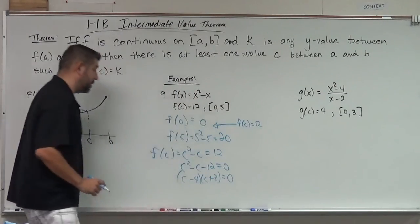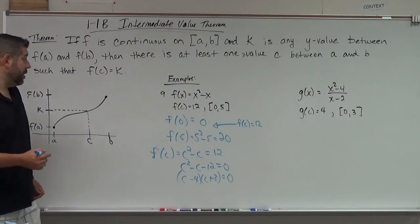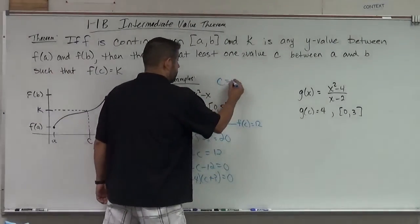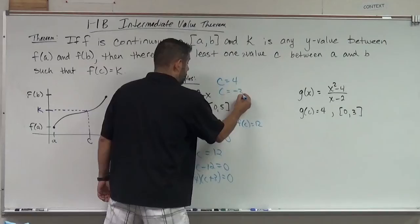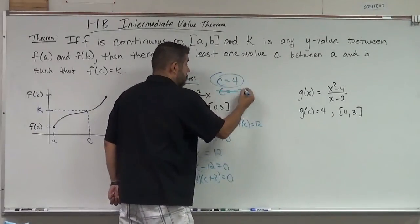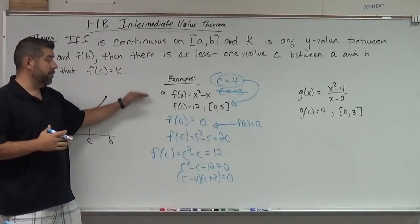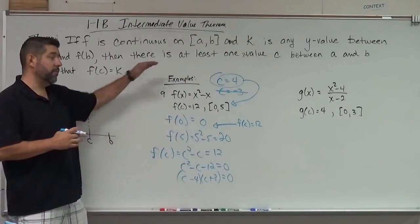c minus 4, c plus 3 equals 0, and we're going to get 4 and negative 3. And which one works? This one works. This one doesn't work because 4 is in that interval. So we've checked the intermediate value theorem, and then we've found c.